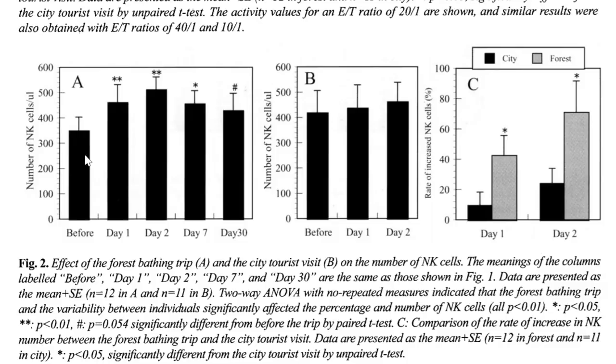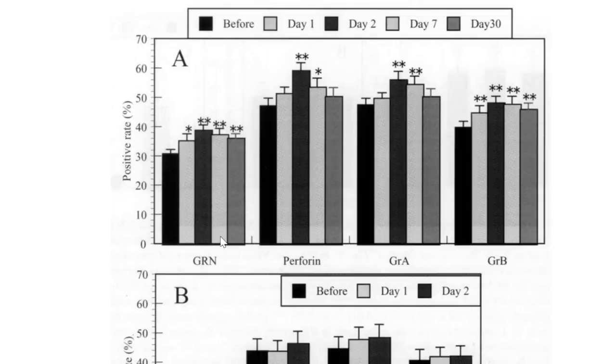So that was activity. Let's look at cells themselves, natural killer cells. Again for those that went to the forest, significant increase in the cell count and then again at day two holding steady, even seven days after the initial exposure to the forest and then even at 30 days. Whereas here in the tourists to the city there was really no increase that was statistically significant. Again we see that the forest tourists had a much higher increase in natural killer cells than the city tourists.